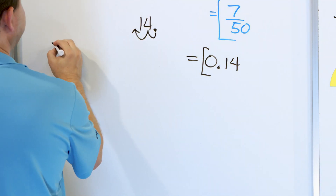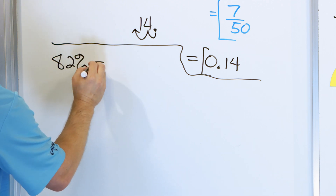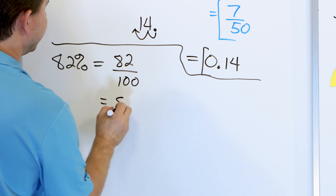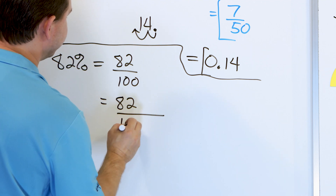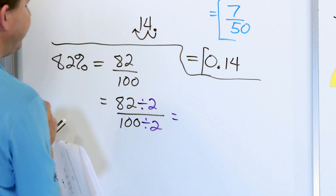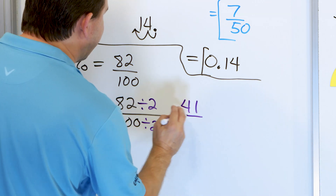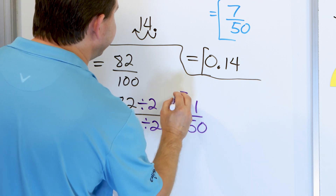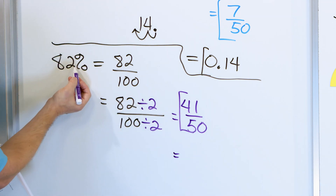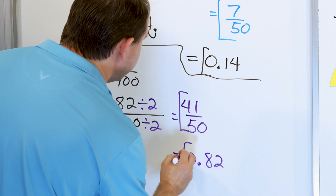Last problem: 82%. As a fraction: 82 over 100. Both are even, so divide top and bottom by 2. 82 divided by 2 is 41, and 100 divided by 2 is 50, giving 41 fiftieths. For the decimal: move the invisible decimal two spots to the left to get 0.82. So 0.82 is the decimal equivalent and 41 fiftieths is the fractional equivalent of 82%.